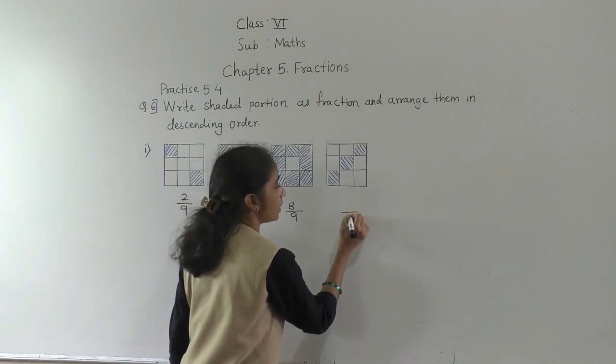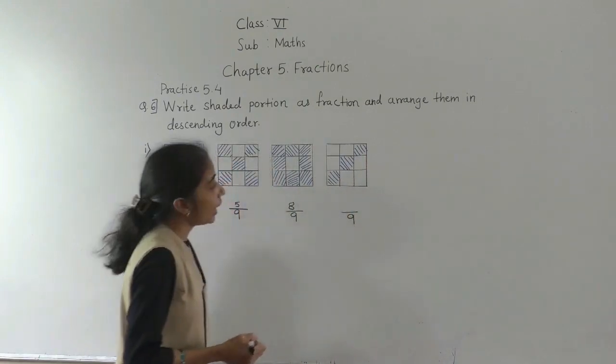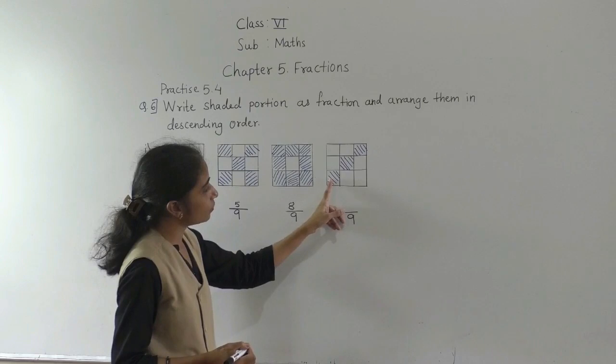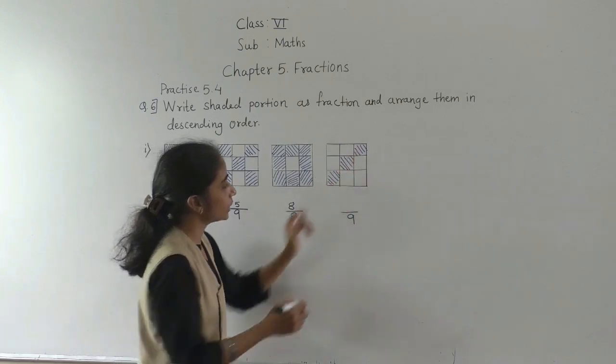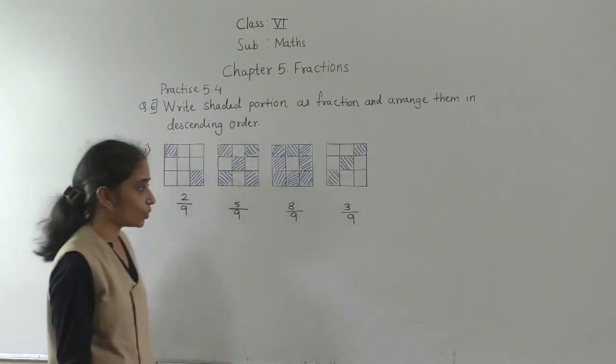Now in this figure, total parts are 9, and from that 3 parts are shaded: 1, 2, 3 — 3 parts are shaded.